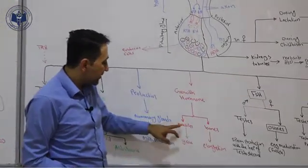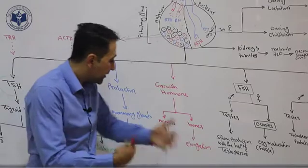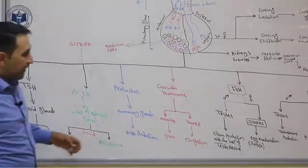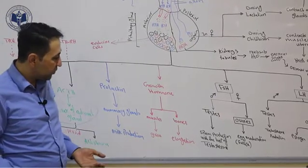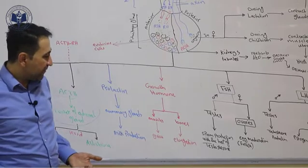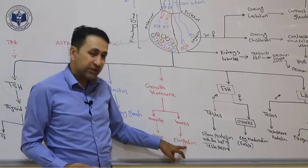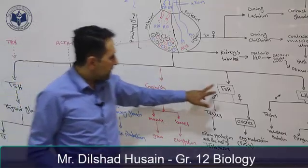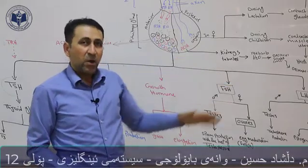Growth hormone stimulates skeletal muscles to grow and stimulates the bones for ossification — specifically elongation. Elongation, discussed in chapter 1 section 2, is the process by which long bones of the arms and legs increase in length, density, and circumference.